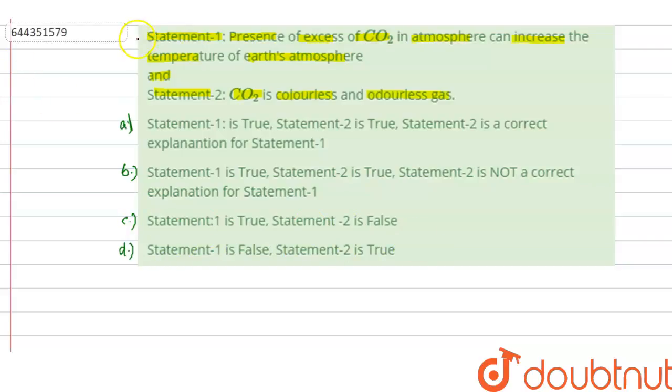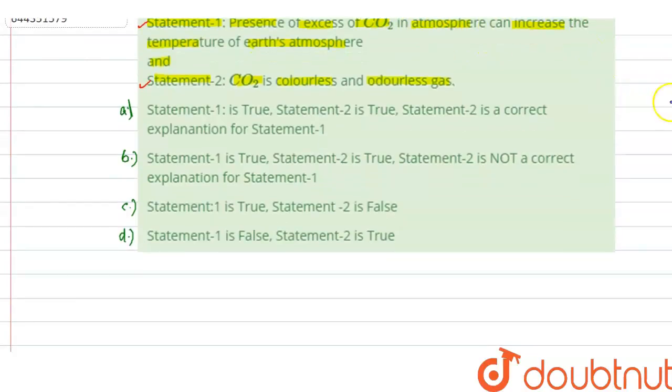So in this question, two statements are given, Statement 1 and 2. We have to check whether these statements are true or false. In the first statement, it is given that presence of excess of CO2 in atmosphere can increase the temperature of earth atmosphere.